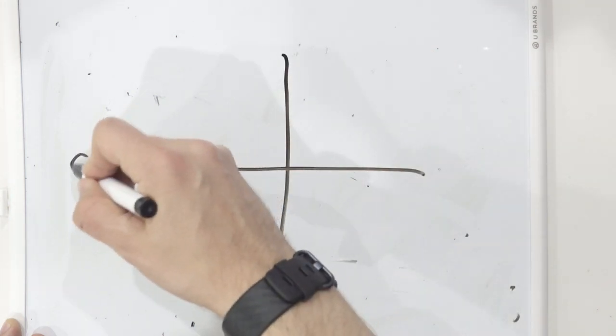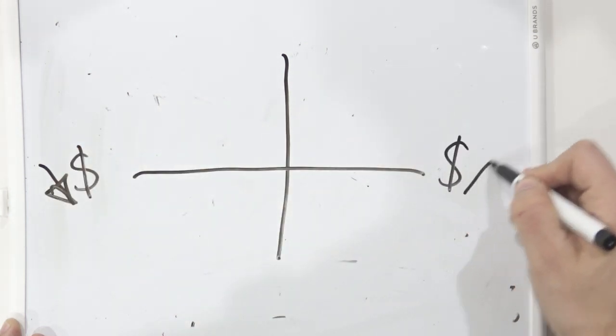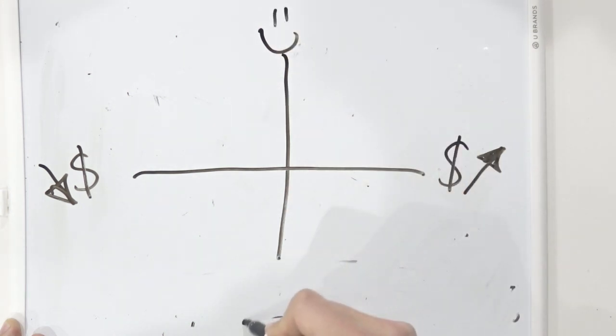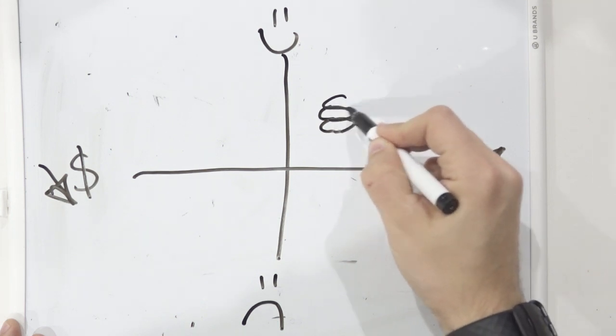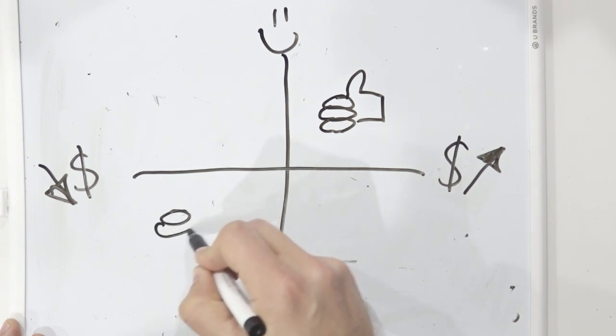On a 2x2, the x-axis is outcomes or you could call it ROI or business value realization. Is the customer achieving their desired outcome with your product or service? And then the y-axis is experience. Does the customer like you? Are they happy with your company? Ideally, we want everybody to be up here in the top right, achieving outcomes, having great experiences, and we never want to be in the bottom right. No ROI and they don't like you, obviously.